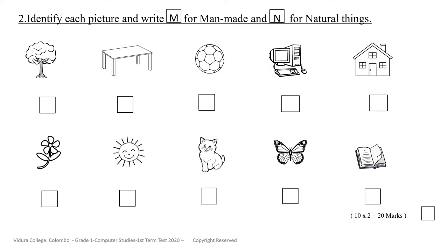Find only the man-made things and write letter M in the given box. Find only the natural things and write letter N in the given box.